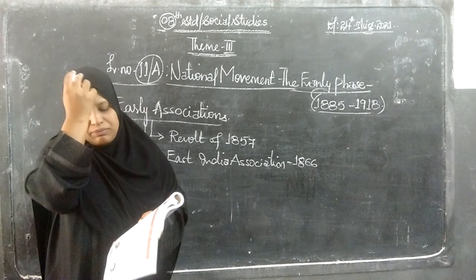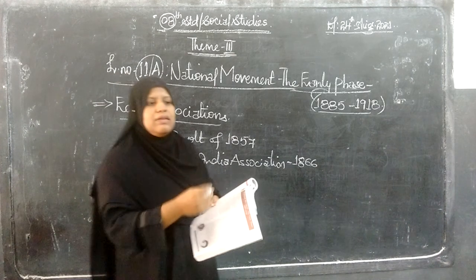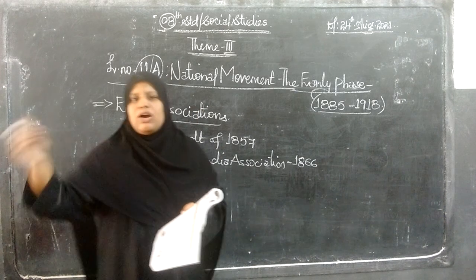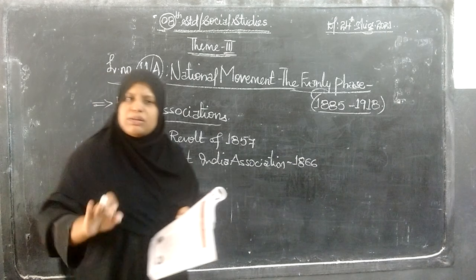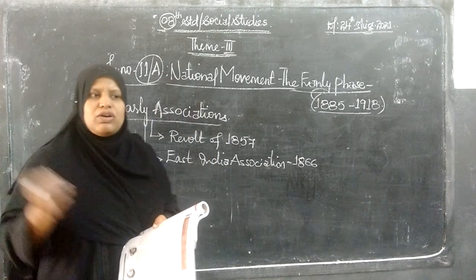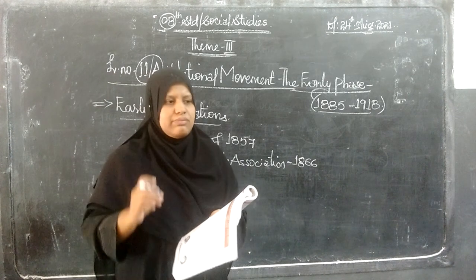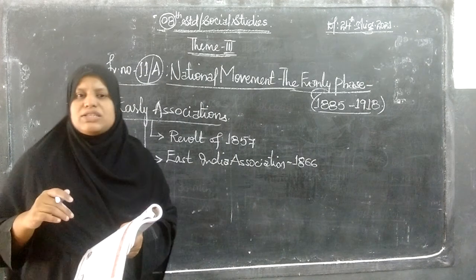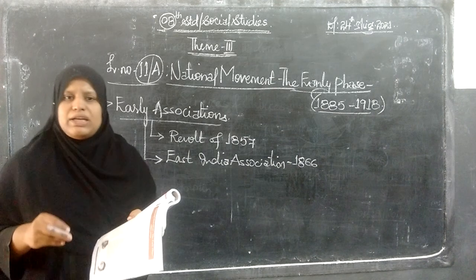The landlords and zamindars, along with different kings from different kingdoms, also supported the revolt. This 1857 uprising had a great impact, but eventually the British regained control over the situation, and the British once again imposed their rule over India from 1857 onwards.